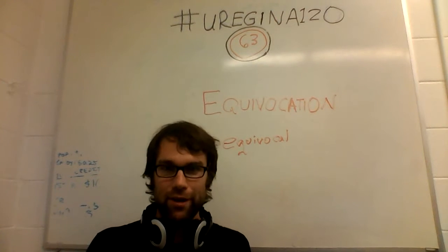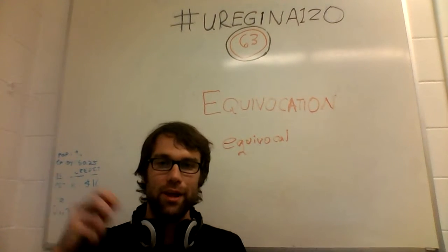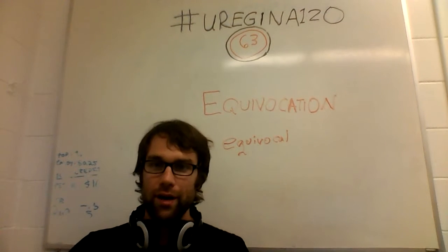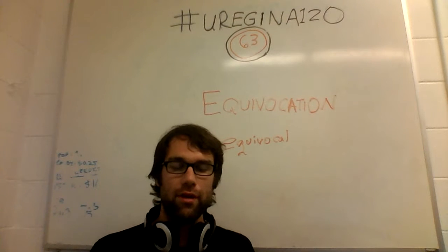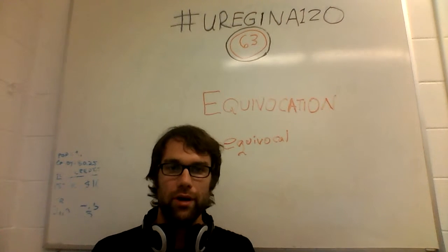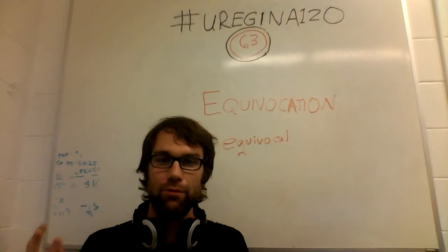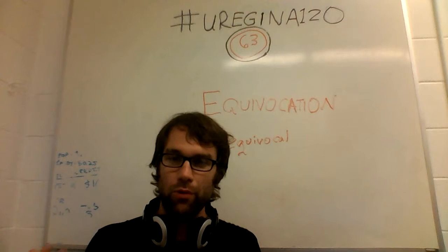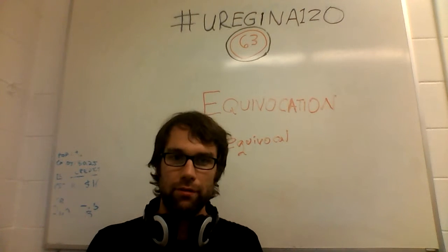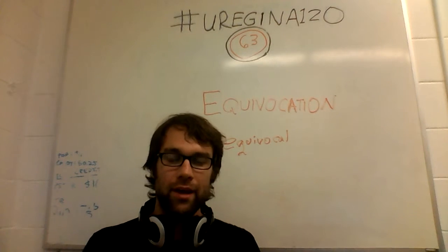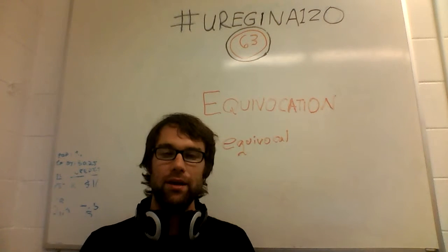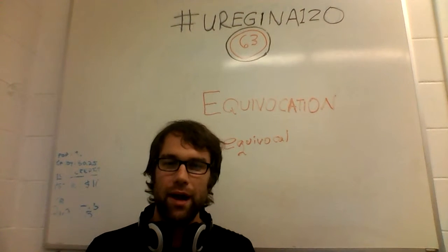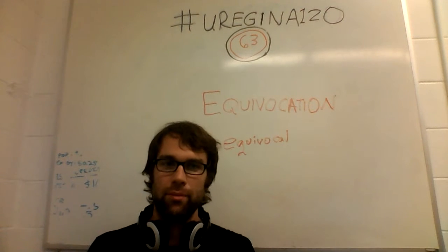As with other videos in this series, this concept is related to other things we've talked about — specifically, the four-term fallacy. As discussed in that video, most of the examples we had were by using equivocation. You can create four terms very easily by taking three terms and using one of the words twice with two different meanings. If you look at the argument, it doesn't look like you've committed this error, because it reads as if you've made a valid argument, even though you have not.